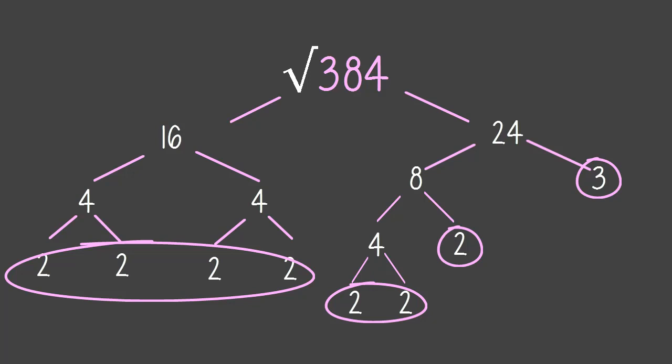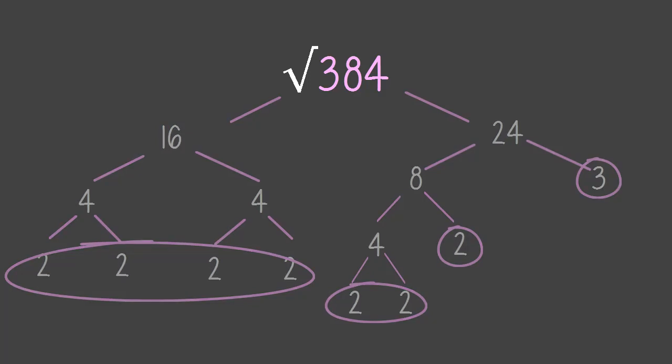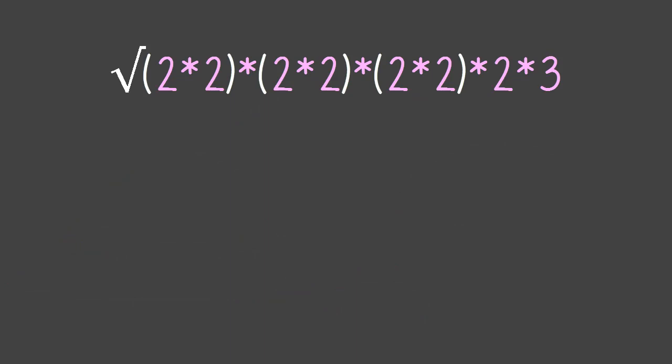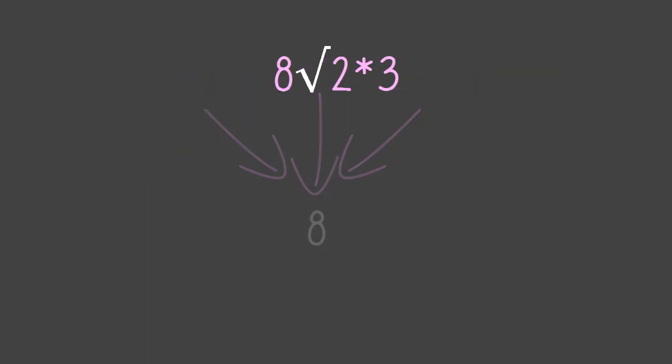Now, let's rewrite 384. Once we finish, we pull out one number from each pair, multiply them together, and place the final product outside the radical. The numbers left over get multiplied together and remain inside the radical.